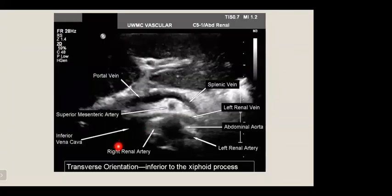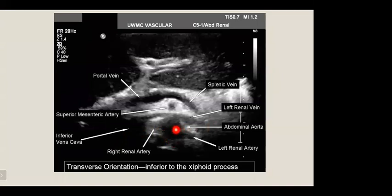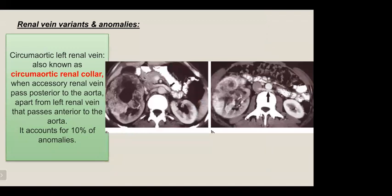This ultrasound image in transverse orientation inferior to the xiphoid process shows the renal arteries and veins. We can identify the abdominal aorta, the right and left renal arteries, the left renal vein entering the IVC, the superior mesenteric artery, the portal vein, and the splenic artery.